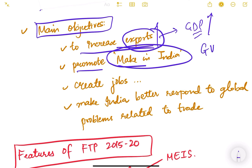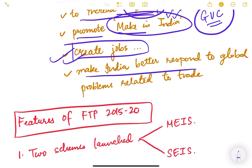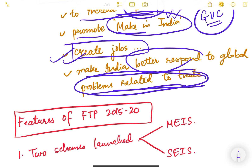To be part of global value chains, we need a good foreign trade policy because many inputs and components in the manufacturing and value addition process are imported. A good foreign trade policy also helps create jobs — more manufacturing, more exports and imports means more jobs created. It also helps India respond better to global trade-related problems.